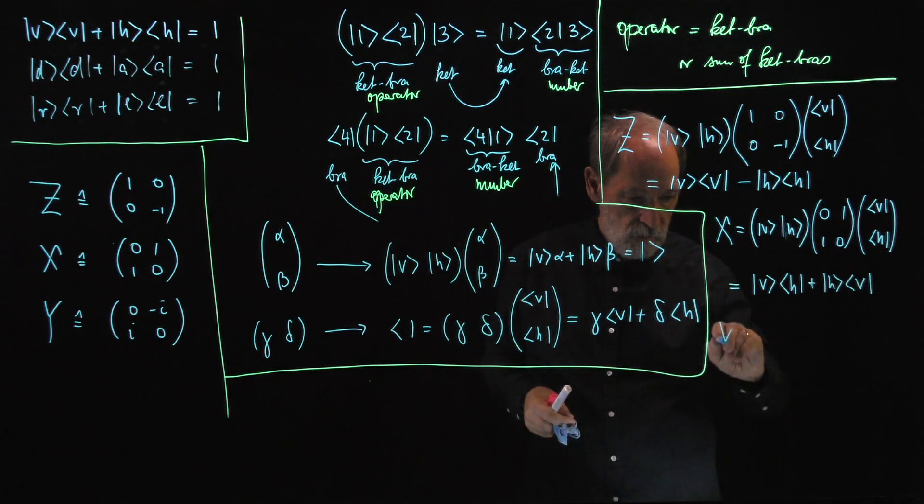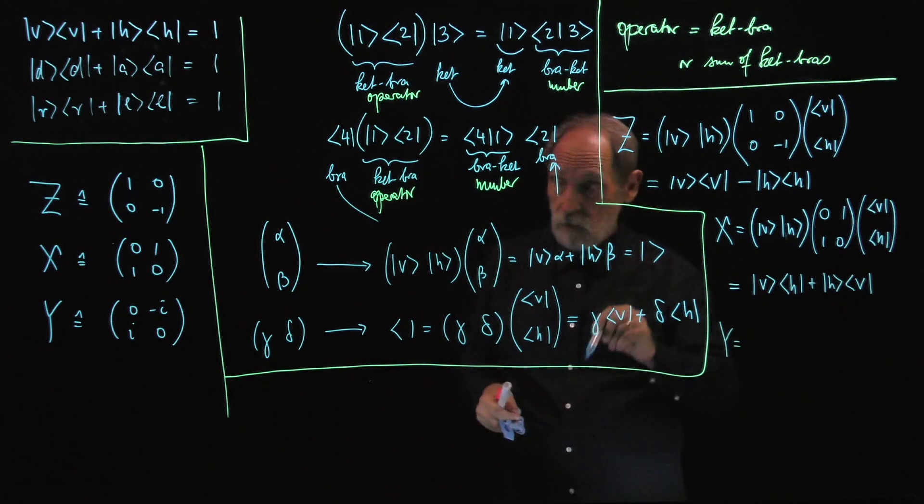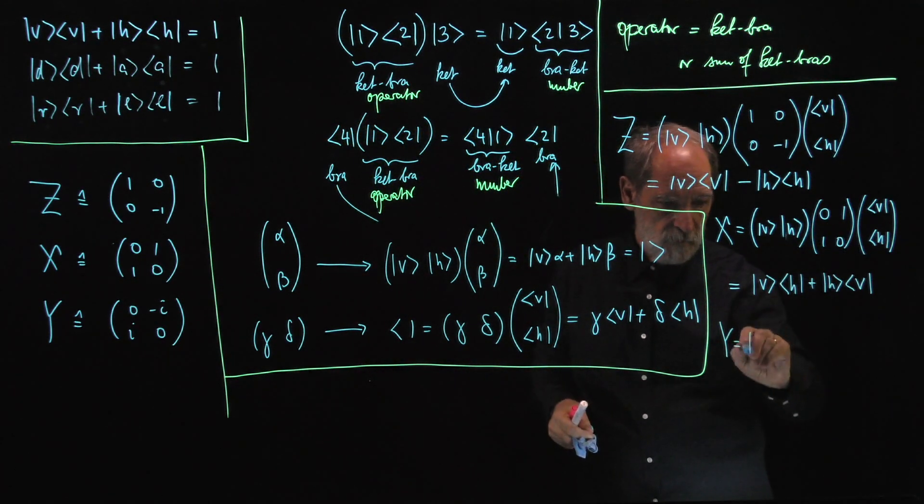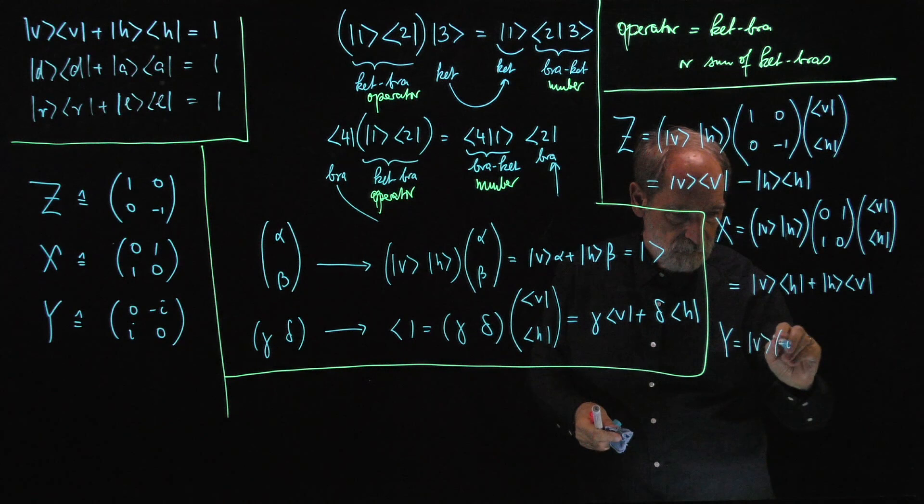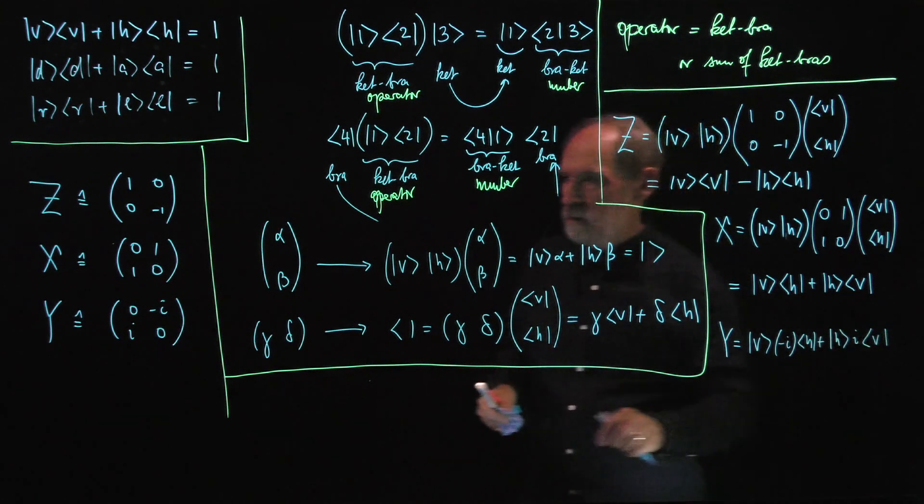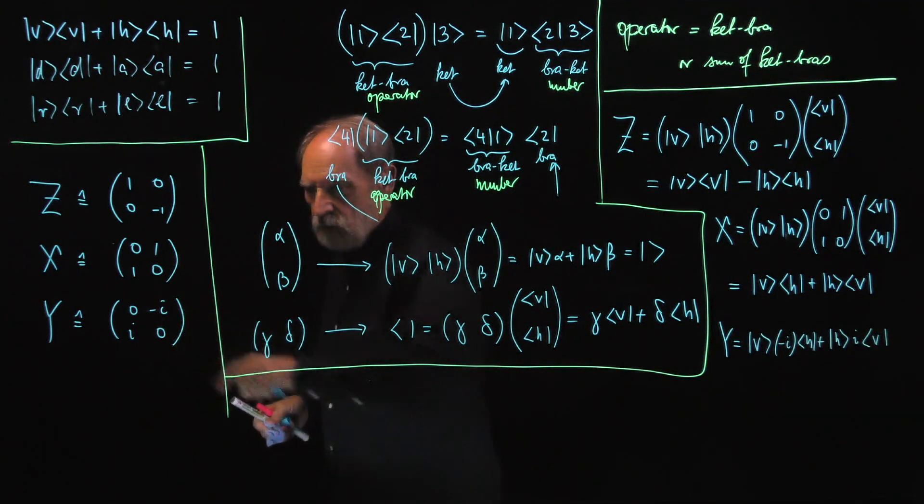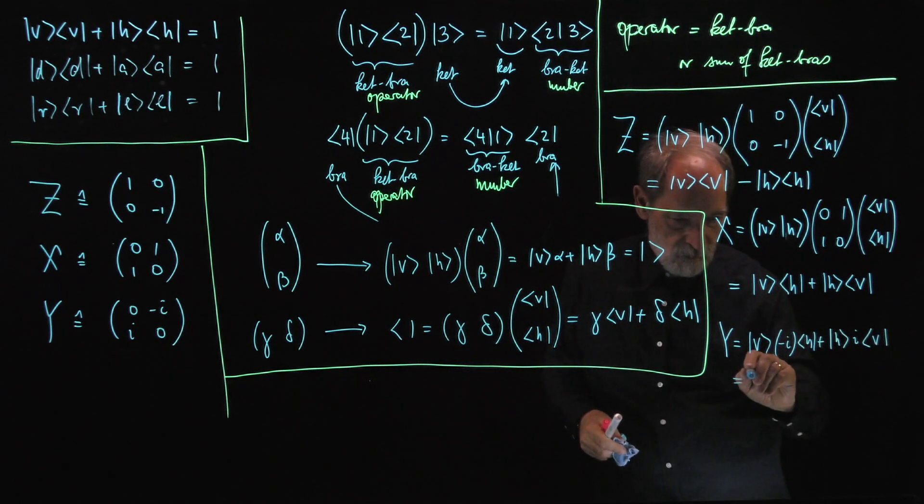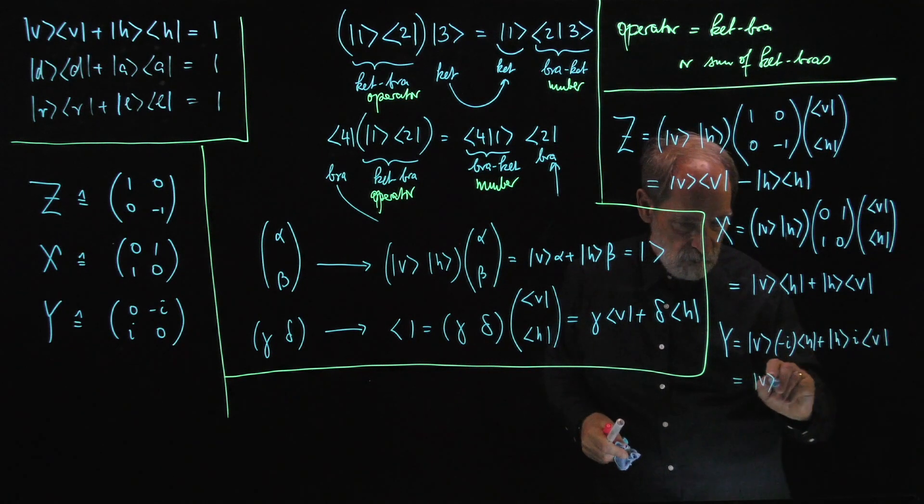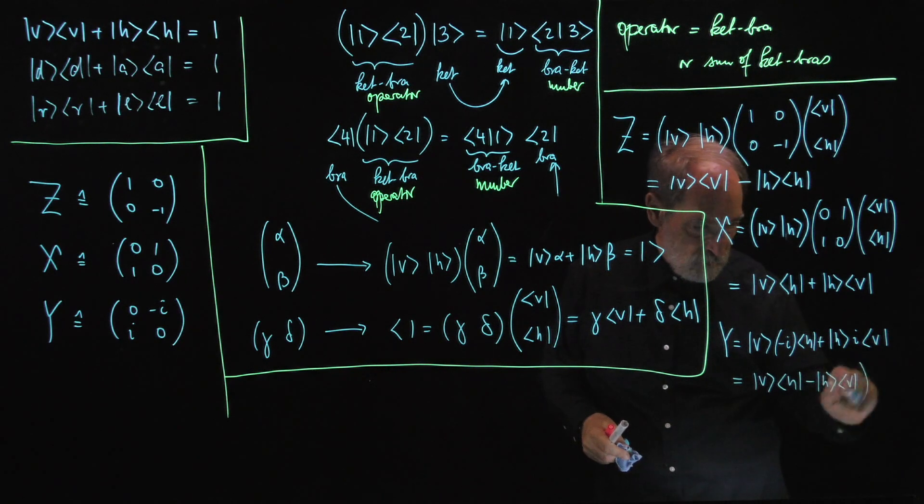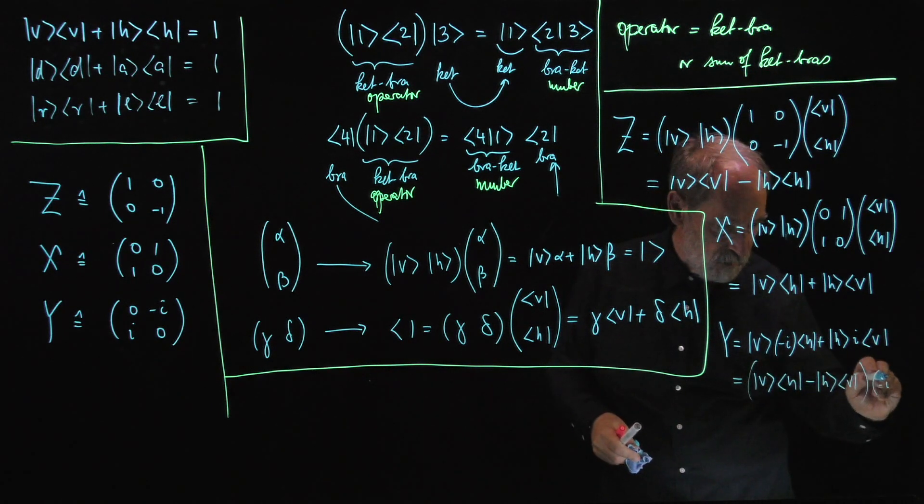Finally, the Y. This is the matrix. Put this matrix here. You will have the V minus i, H, and the H plus i, V here and here. If we factor out the i, then we have the V, H minus the H, V multiplied by minus i.